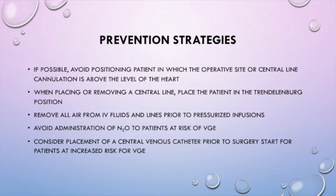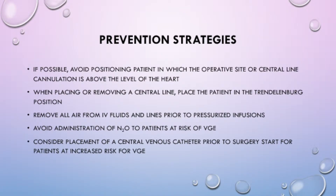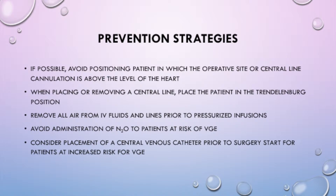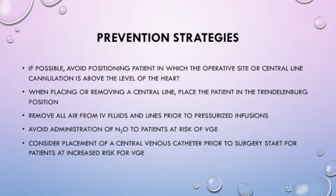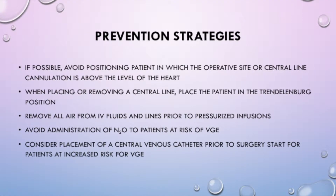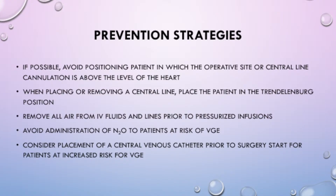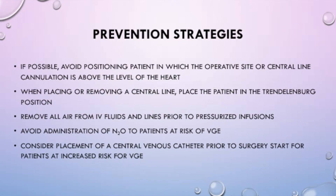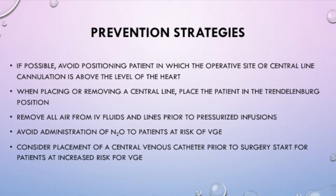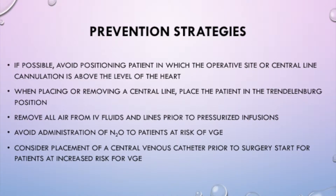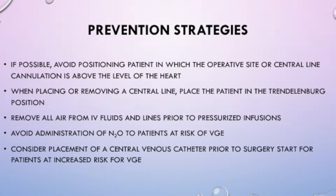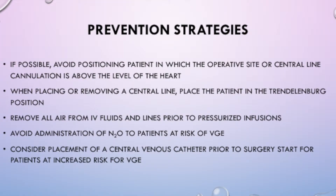It is important for anesthesia providers to identify clinical scenarios that predispose patients at risk for a VGE so that the appropriate preventative measures can be taken. If possible, avoid positioning the patient in which the operative site or central line cannulation is above the level of the heart. When placing or removing a central line, place the patient in the Trendelenburg position. Remove all air from IV fluids and lines prior to pressurized infusions. Avoid administration of nitrous oxide to patients at risk of VGE. And lastly, consider placement of a central venous catheter prior to surgery start for patients at increased risk for VGE.